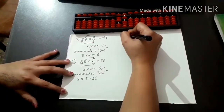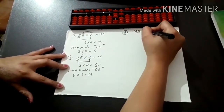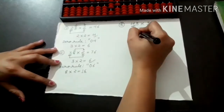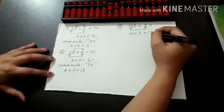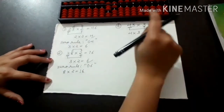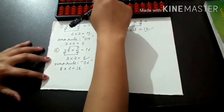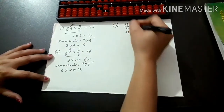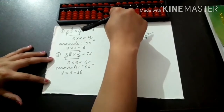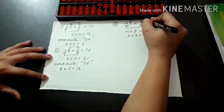Now the same approach for multiplying by 3. First question: 43 into 3. Multiply the first digit: 4 into 3 equals 12. Since 12 is a two-digit number, we do not apply the zero rule. Set your Abacus. Place 1 in the hundreds rod and 2 in the tens rod. Next: 3 into 3 equals 9. Place 9 in the units rod. The answer is 129.